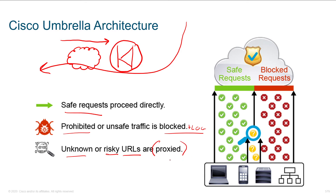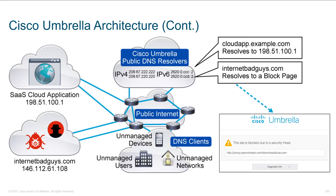If a user is out in the field, we tunnel their traffic to Cisco's server. Cisco proxies it, does SSL decryption if appropriate, puts the content into a sandbox, and analyzes it thoroughly. So we have three different approaches for dealing with traffic: safe, blocked, and the stuff that's unknown or in the middle.